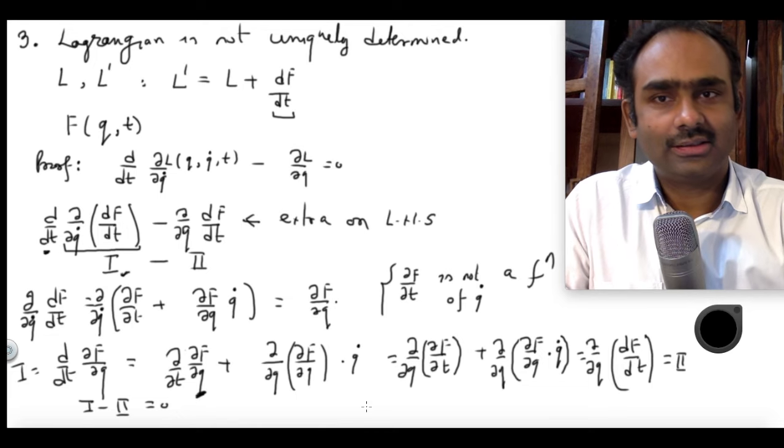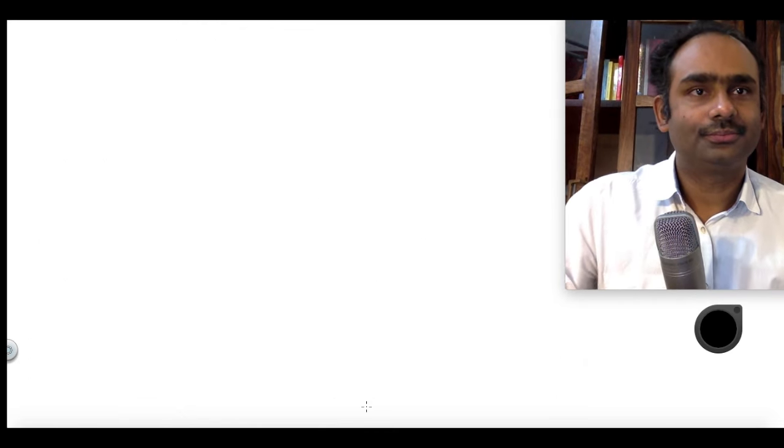That is another very important property to keep in mind: you can always add to the Lagrangian a function which can be written as a total time derivative of another function that depends only on the generalized coordinates and time, not the velocities. Next, I want to look at the kinetic energy term when we are using generalized coordinates. Typically in Cartesian coordinates you have just a sum of (1/2)mv², with no cross terms between different particle velocities. But this situation changes when you go to generalized coordinates, and that is what we will look at in the next video.